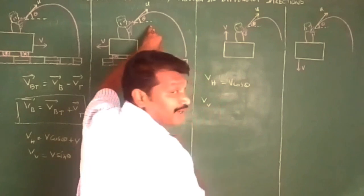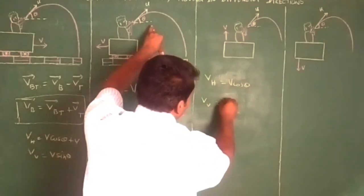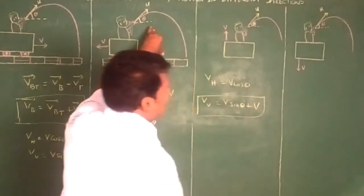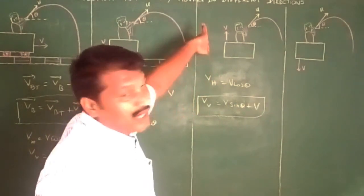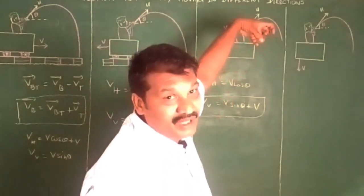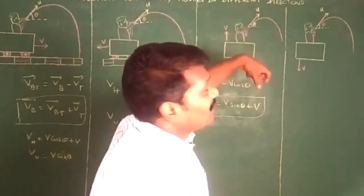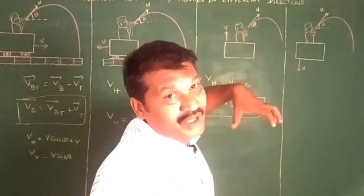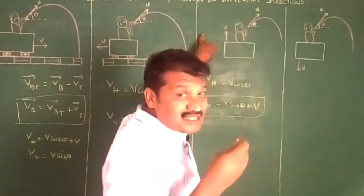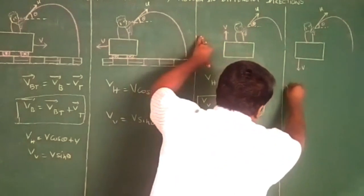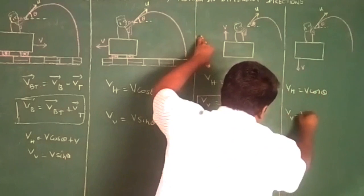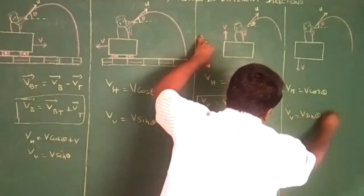In another case, if the ball is thrown upward while the trolley moves horizontally, the horizontal component is v_h equal to v cosθ. But there is a change in the vertical component: v_v is equal to v sinθ minus v.